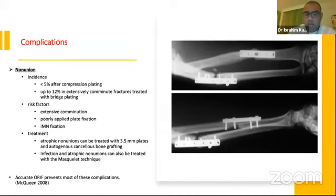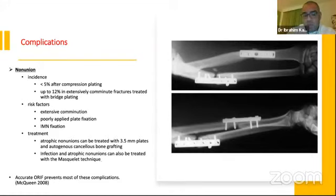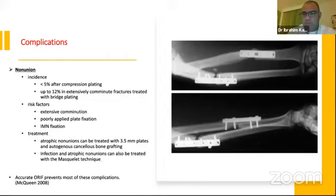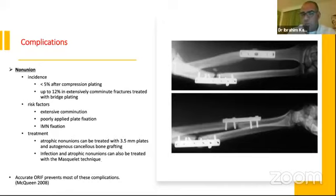If we have non-union, atrophic non-union can be treated with a 3.5 mm plate. If a plate is already in place, we can redo the plating with bone grafting. If there is infection with atrophic non-union, the Masquelet technique can be used — a staged technique to create a biological membrane, then fix and graft. As McQueen stated in 2008, accurate open reduction and internal fixation prevents most of these complications.